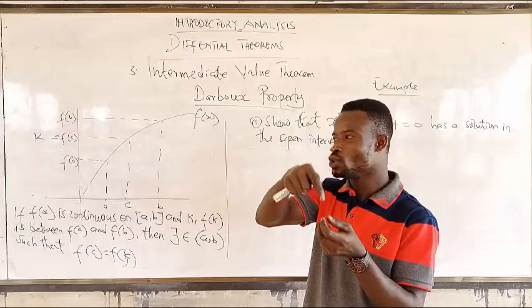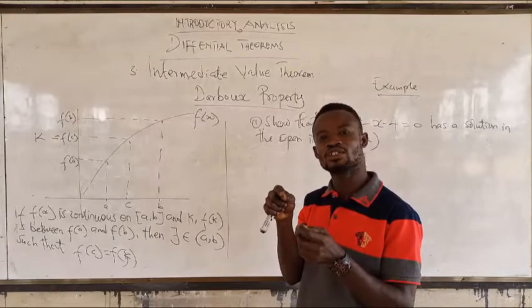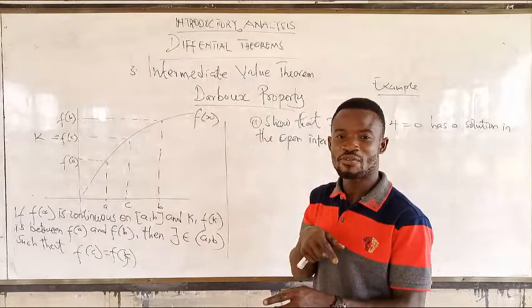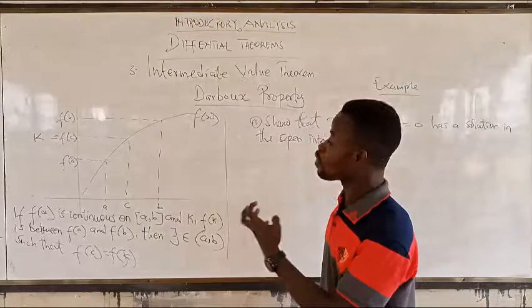What we are saying is that when we do the substitution of the interval into the function, we are going to get a real value. And when we get a real value, that means that the Daboss property has been satisfied. That is all.